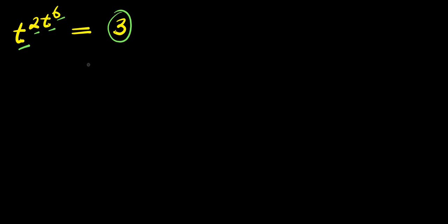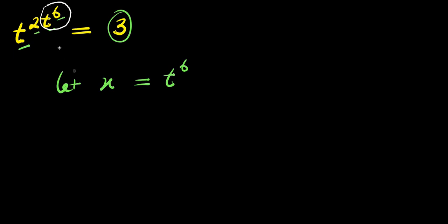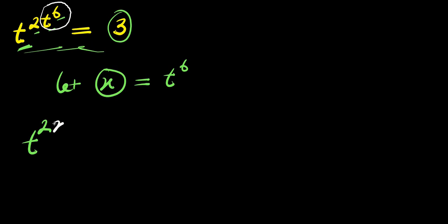What we are going to do is start by letting x equal t to the power of 6. That means this t to the power of 6 will now become our x. So this equation becomes t to the power of 2 times x equals 3.